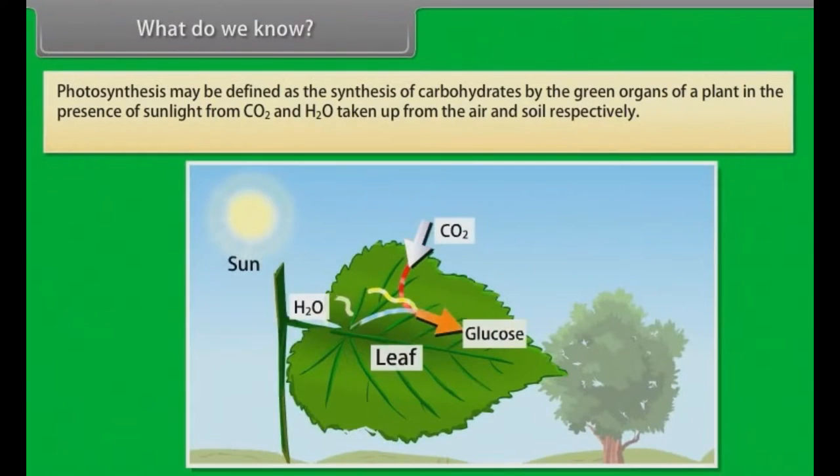What do we know? Photosynthesis may be defined as the synthesis of carbohydrates by the green organs of a plant in the presence of sunlight from carbon dioxide and water taken up from the air and soil respectively.